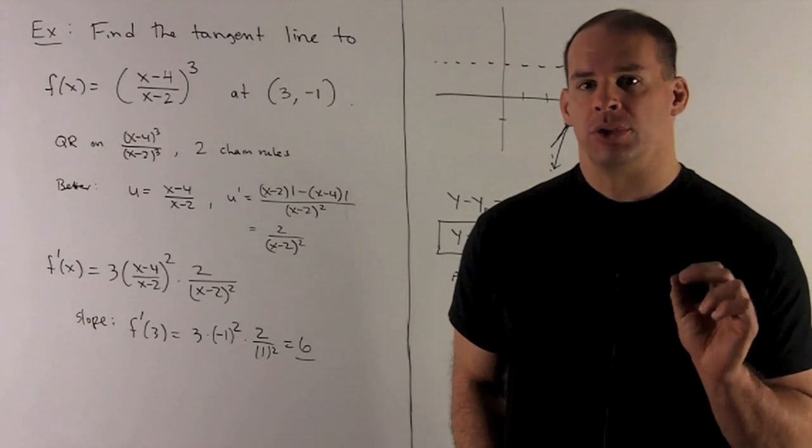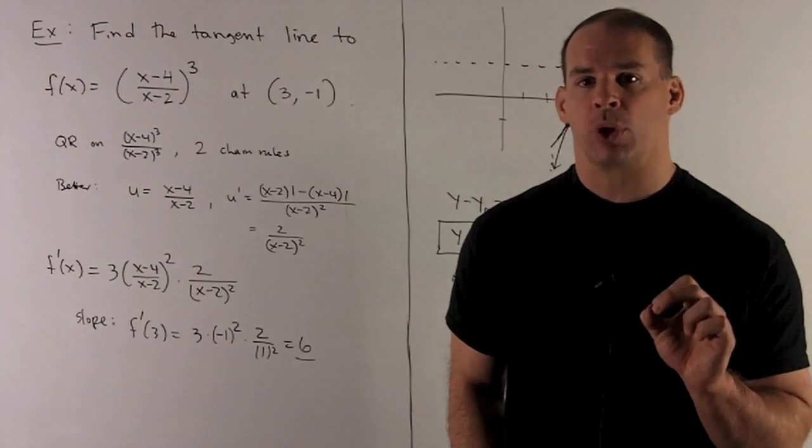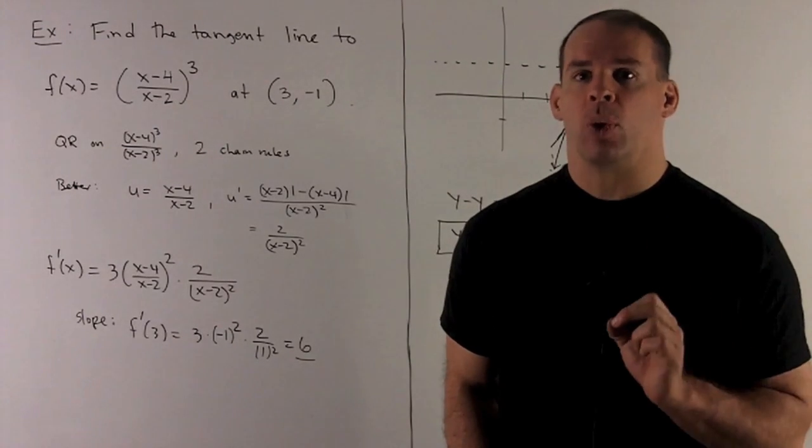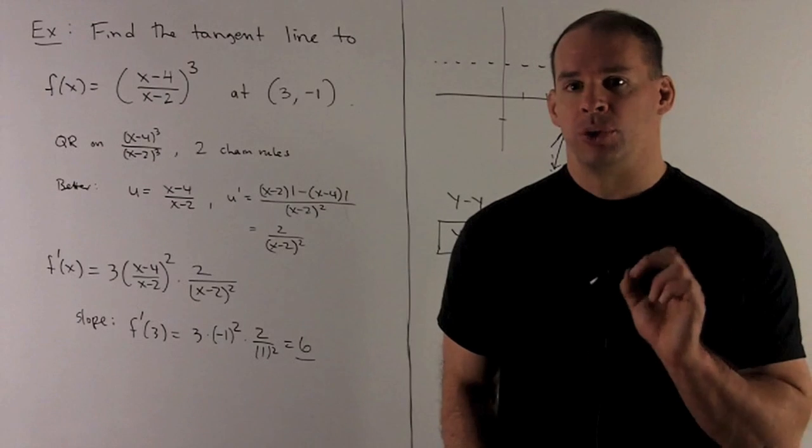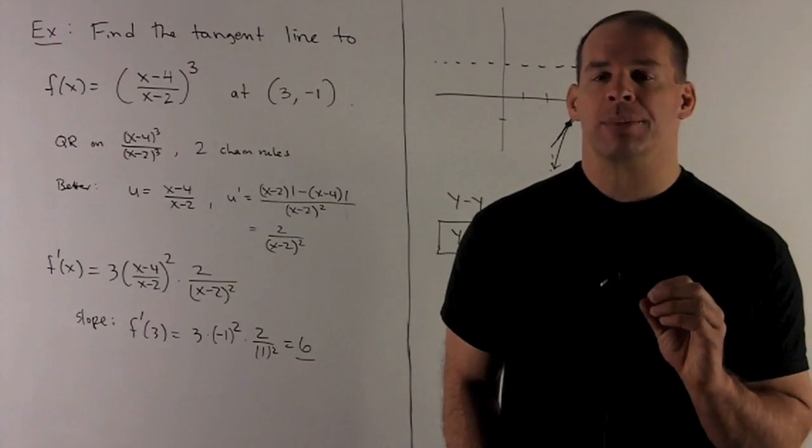Now, two ways to go about this. One way, we could consider this to be x minus 4 cubed over x minus 2 cubed, then apply the quotient rule to that. If we do that, we'll have two chain rules. So we only want one chain rule.